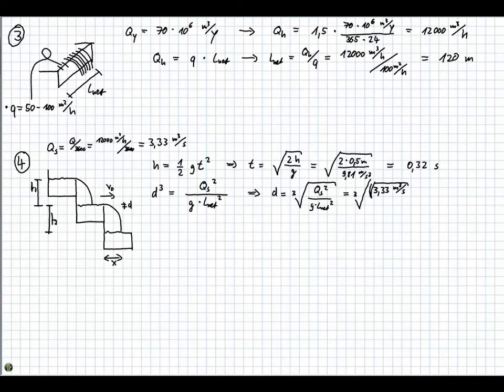Sorry about that. It's supposed to be in brackets obviously. It's squared divided by 9.81 meters per second squared times l net. We calculated this in the last exercise with 20 meters squared. And if we calculate this, this gives us 0.043 meters for the diameter of the water jet.